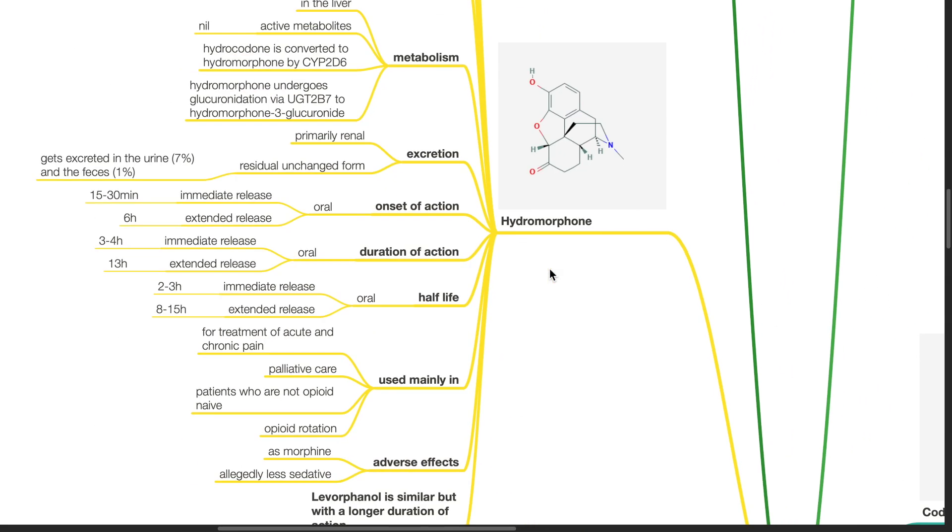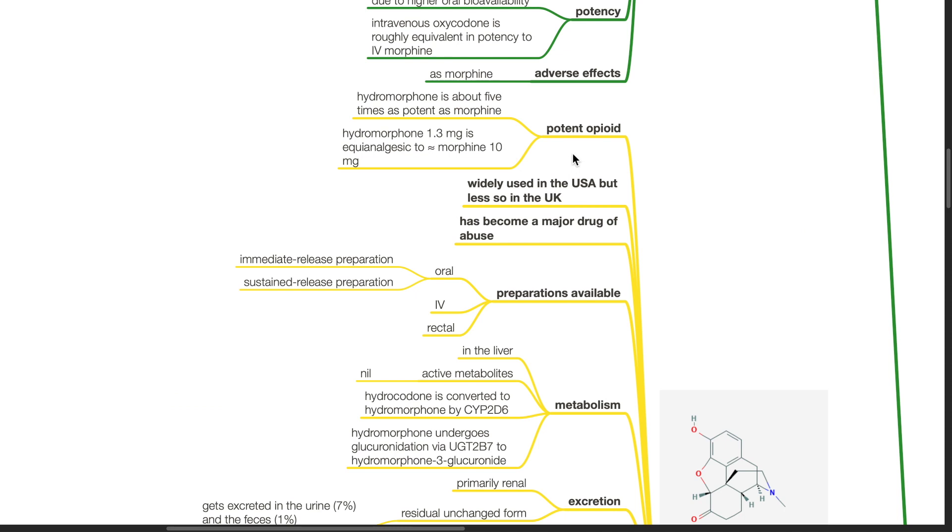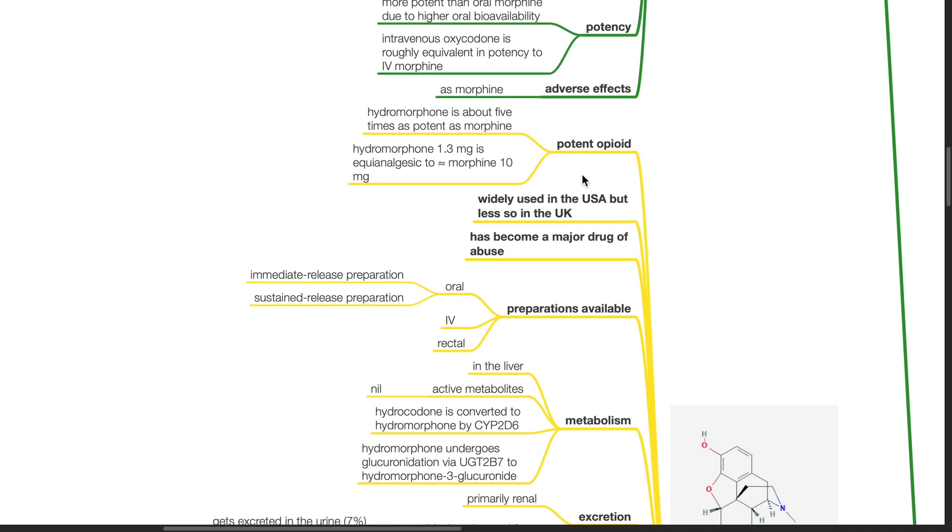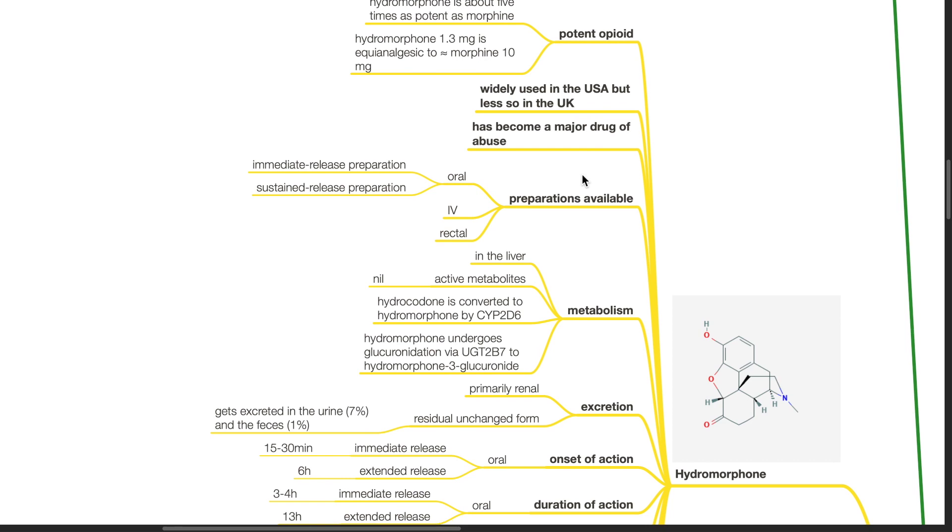Hydromorphone. This is a potent opioid, about 5 times as potent as morphine. 1.3mg of hydromorphone is equianalgesic to 10mg of IV morphine. It is widely used in the USA but less so in the UK. It has become a major drug of abuse. Preparations available: immediate release or sustained release oral preparations, IV and rectal.